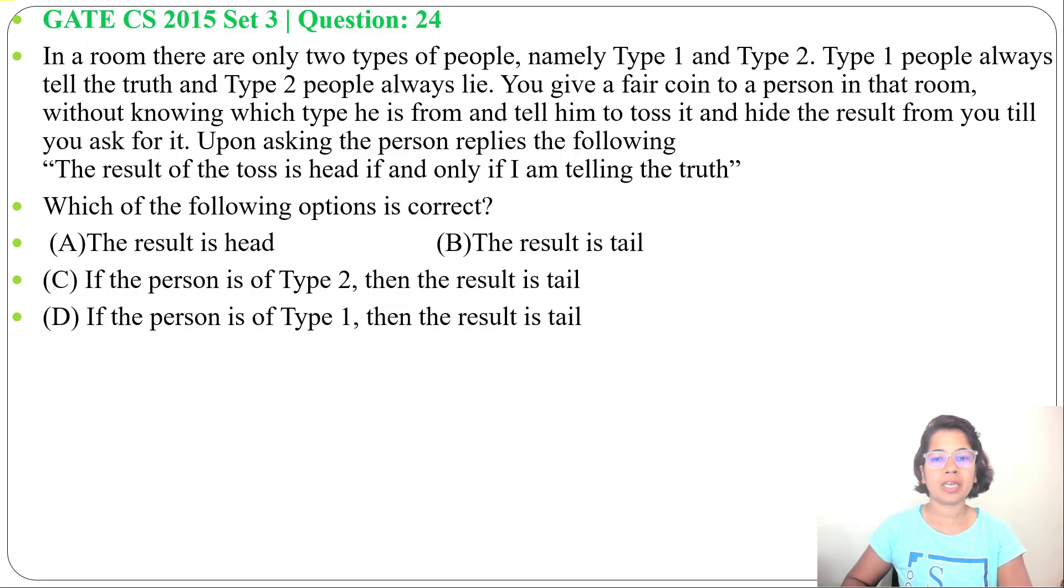Let's solve one previous question of mathematical logic. This question was asked in GATE CS 2015, Set 3, Question Number 24. In a room there are only two types of people, namely Type 1 and Type 2. Type 1 people always tell the truth and Type 2 people always lie.